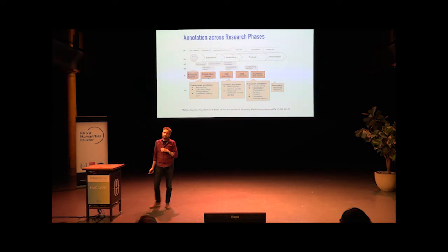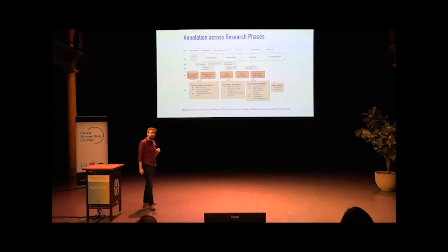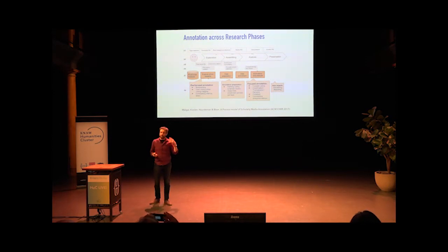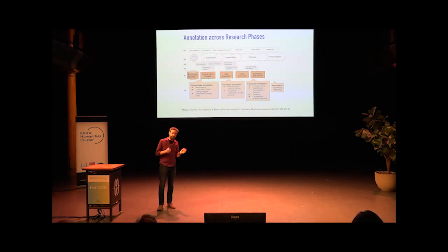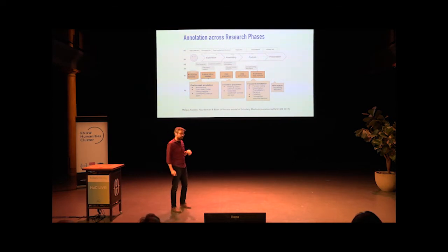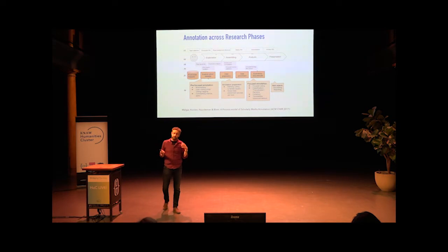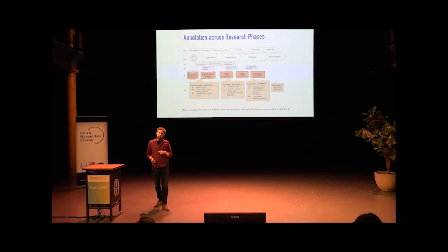A fourth hurdle is that researchers make different types of annotations in different phases of their research. It tends to start very exploratory — making comments and highlights, adding questions, just to organize their own thinking. But later on, this becomes more structured: they make more layered and structured annotations, use classifications with vocabularies, and link across all kinds of objects. Our annotation approach supports all these different types, and we are working on ways to support this bottom-up structuring and having different layers of interpretation.